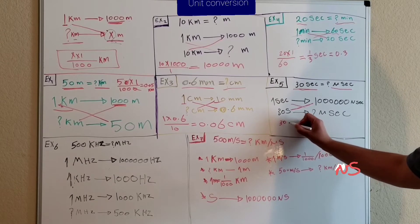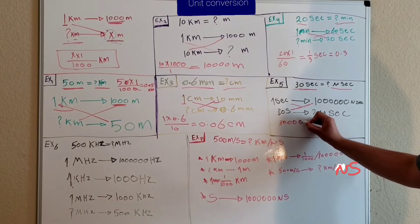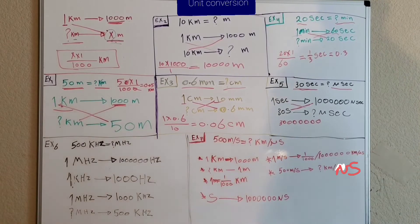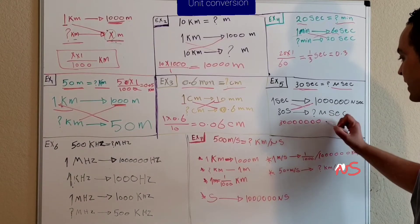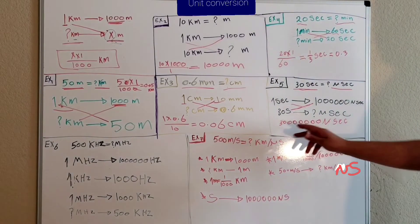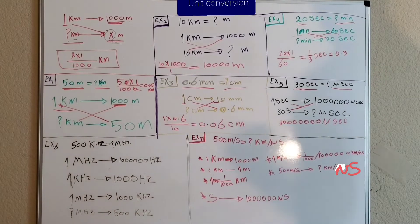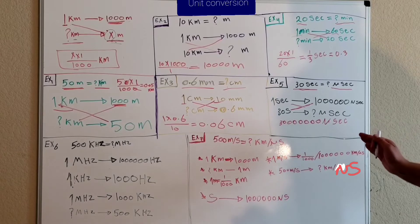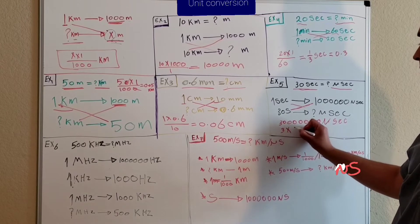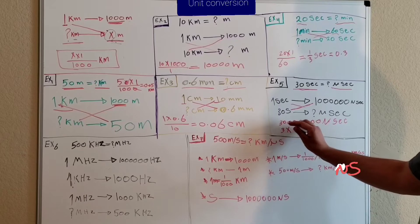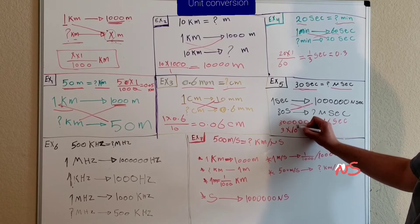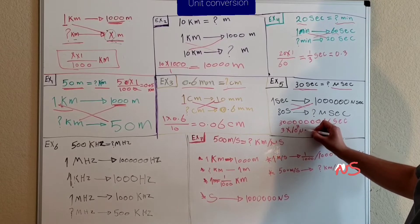The result is thirty million microseconds. We can also write this large number in a better way — instead of thirty million, we count the zeros: there are seven zeros, so we write it as 3 times ten to the power of seven microseconds.